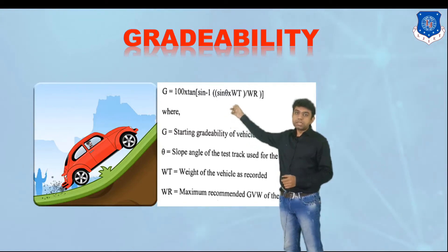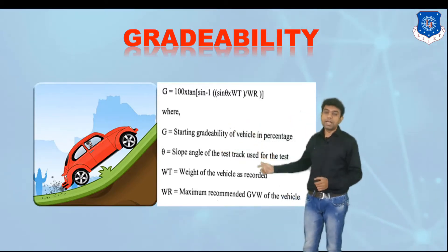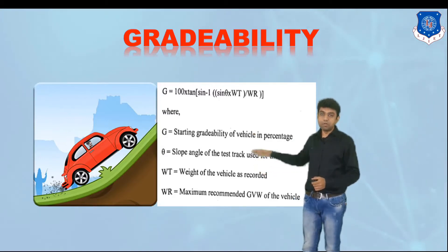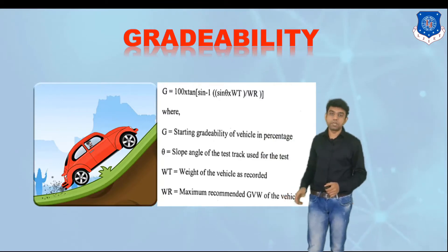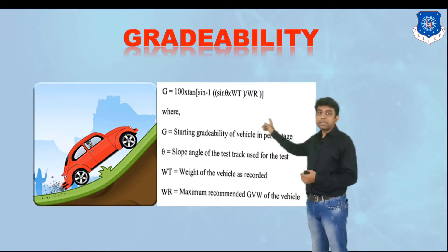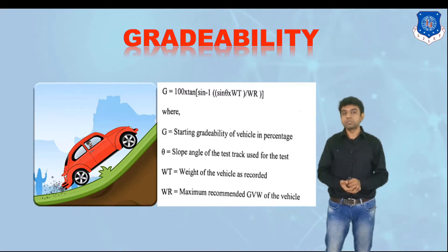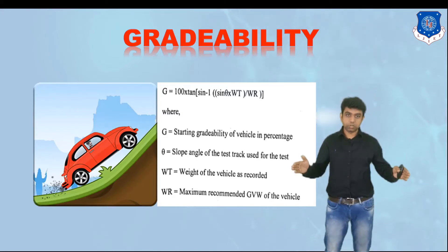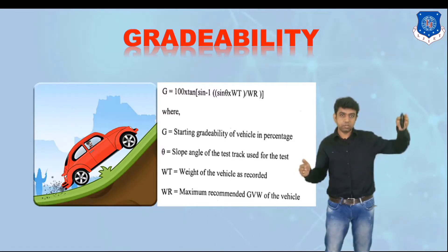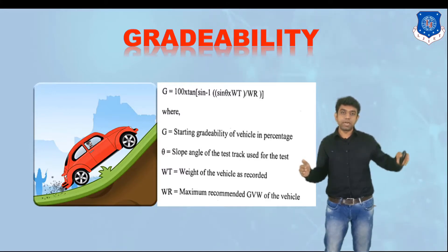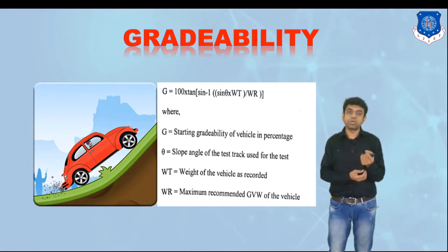Gradability depends on three different terms: theta (the angle of slope the vehicle is required to ascend), Wt (the weight of vehicle as recorded during the test), and Wr (the gross vehicle weight of the vehicle). With these three values you can find out the gradability as a percentage. Gradability can also be defined as rise over run — for example, if the run is 10 meters and the rise is 2 meters, gradability is written as 2:10.